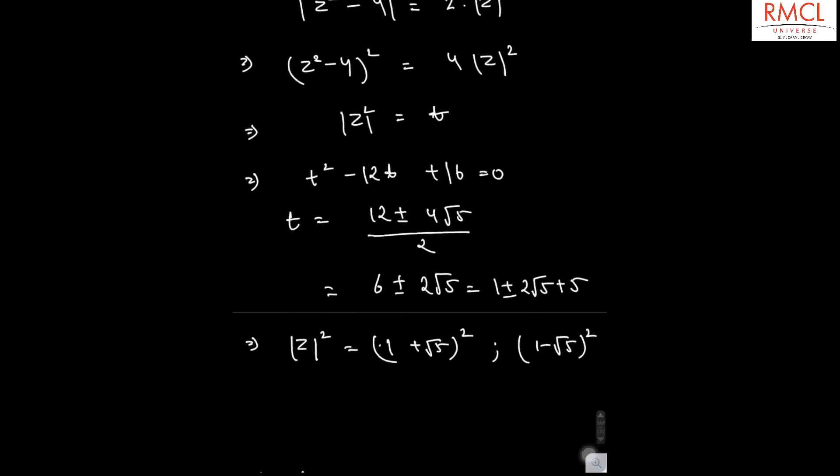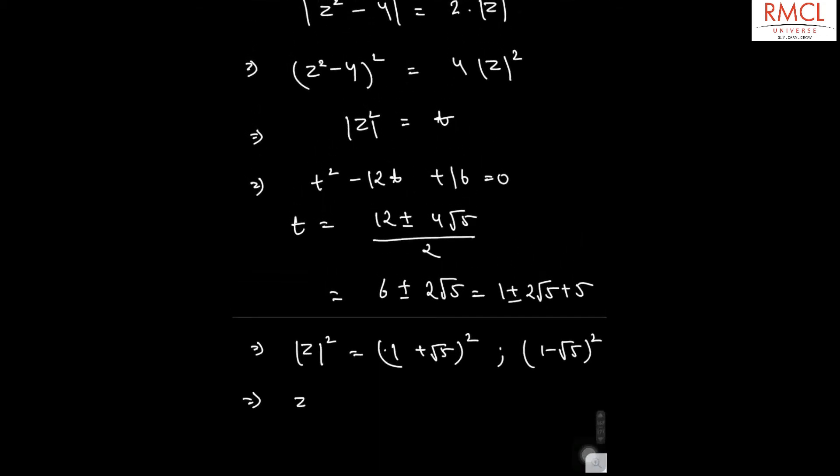So, from this, the values for mod z will be equal to 1 plus root 5 or 1 minus root 5.